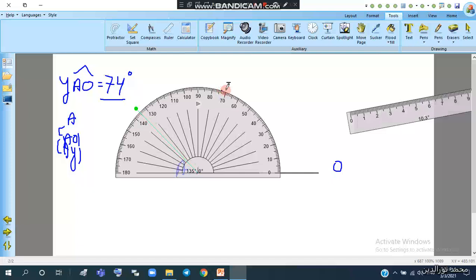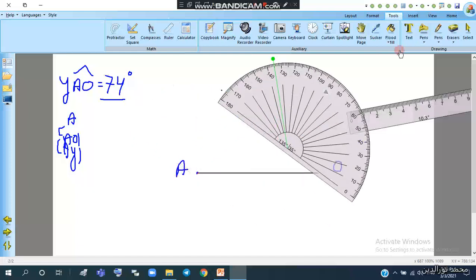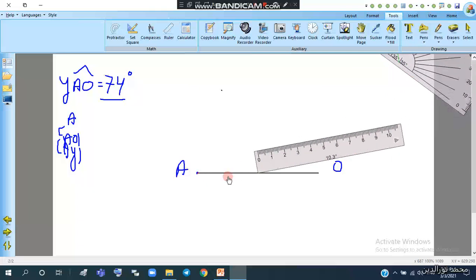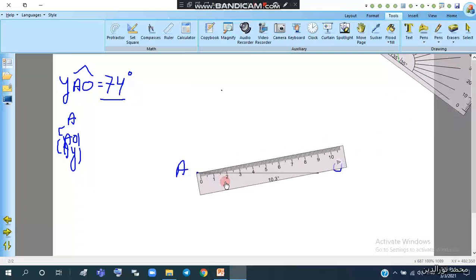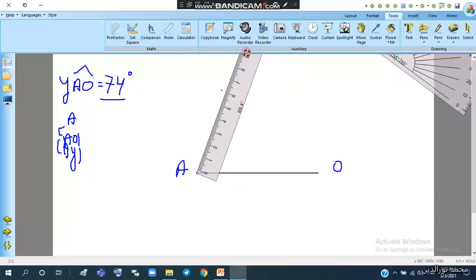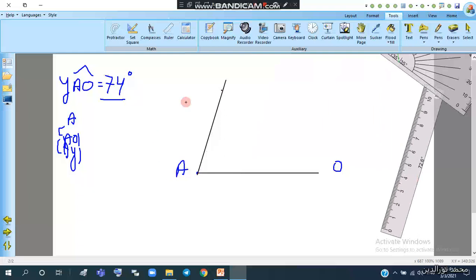And then we have to join these two points, the vertex A and this point, using the straight edge of the ruler. This is side AY.